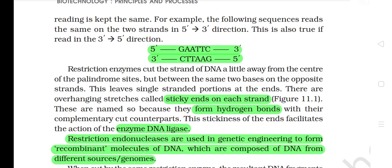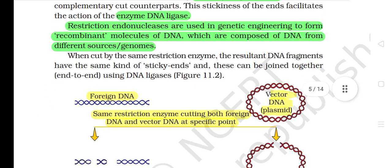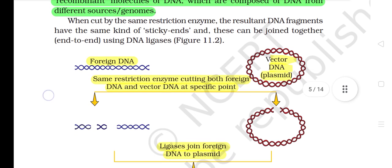This leaves single-stranded portions at the ends. There are overhanging stretches called sticky ends on each strand. These are named so because they form hydrogen bonds with their complementary cut counterparts. This stickiness of the ends facilitates the action of the enzyme DNA ligase. Restriction endonucleases are used in genetic engineering to form recombinant molecules of DNA composed of DNA from different sources or genomes. When cut by the same restriction enzyme, the resultant DNA fragments have the same kind of sticky ends and these can be joined together end to end using DNA ligases.